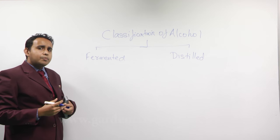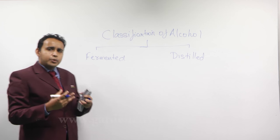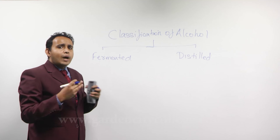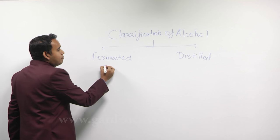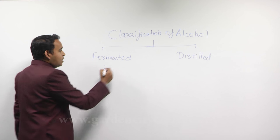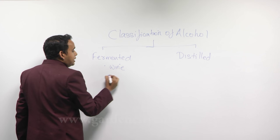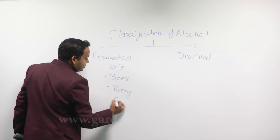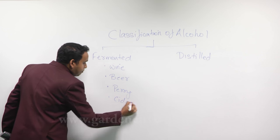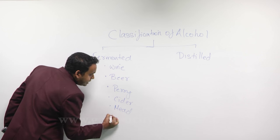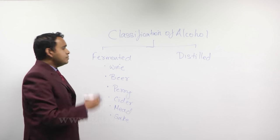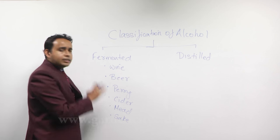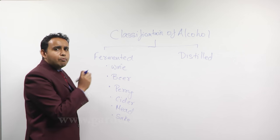Fermented alcohol is a natural process where you take a fruit or a juice which has got natural sugar and we convert it into alcohol by the usage of yeast. Some of the main fermented beverages are wine, beer, sherry, cider, mead and sake. There are many fermented beverages, but these six are the main ones.